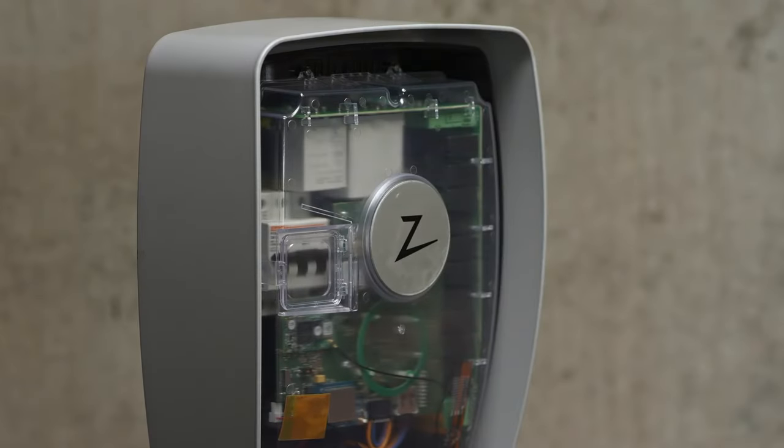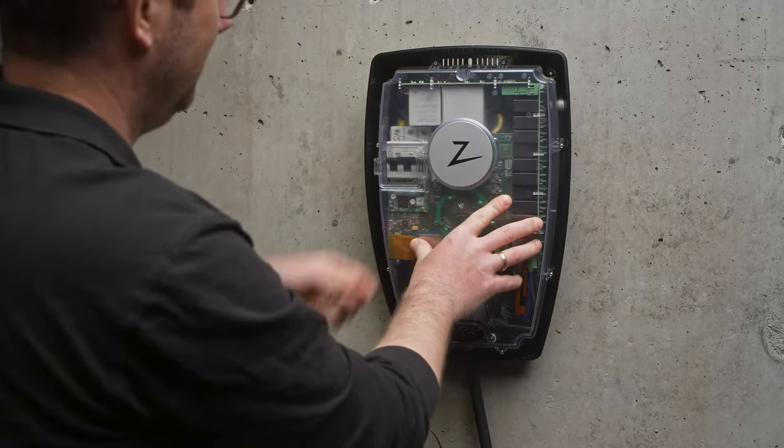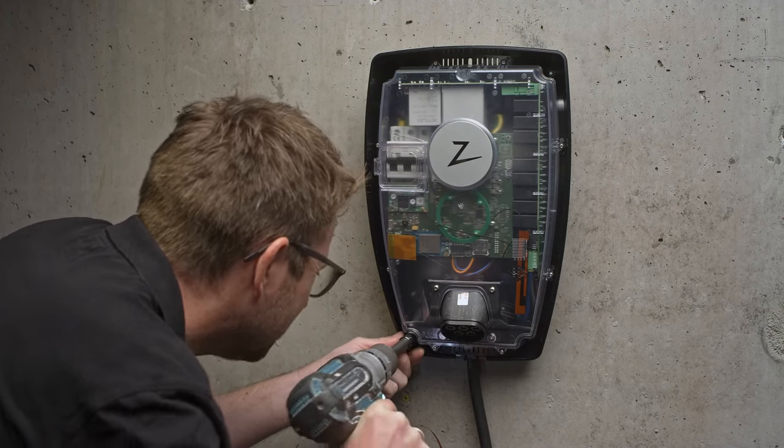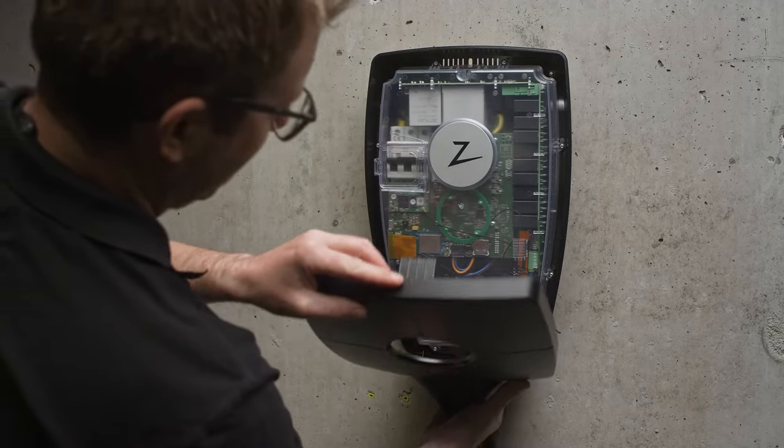Start by removing the front cover from the charging station using the smart key. Then place the charging station on the mounted back plate. Secure the charging station using the four nuts supplied. Secure the cover from the bottom towards the top, as shown here.